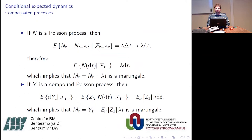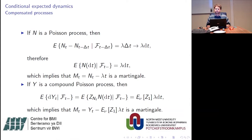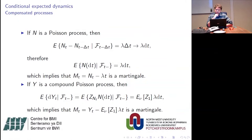For a compound Poisson process Y, we use the same steps as with the Poisson process. One additional property used: if the product involves independent random variables, we can write it as the product of the conditional expectations, allowing us to take the expectation of the jumps out of the conditional expectation. Since the jumps are identically distributed by definition, we have the expected jump Z_n times lambda dT as the conditional expected dynamics of a compound Poisson process. Subtracting that quantity from the compound Poisson process, we can form a martingale.